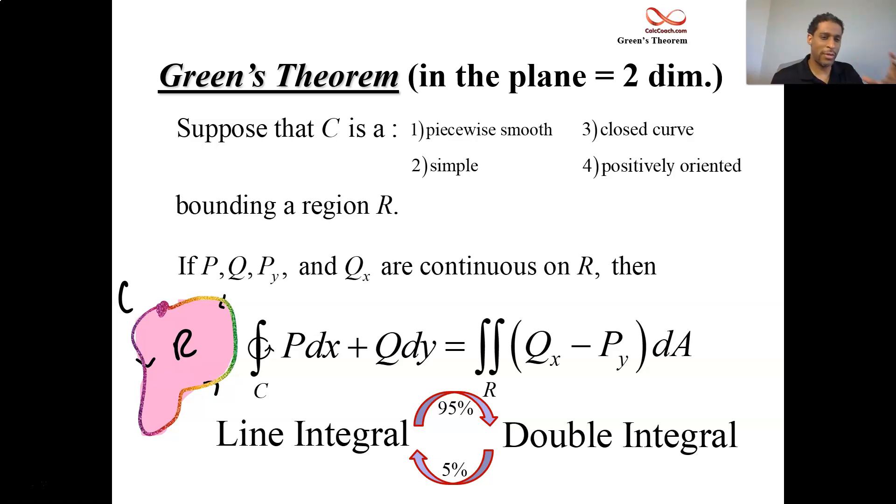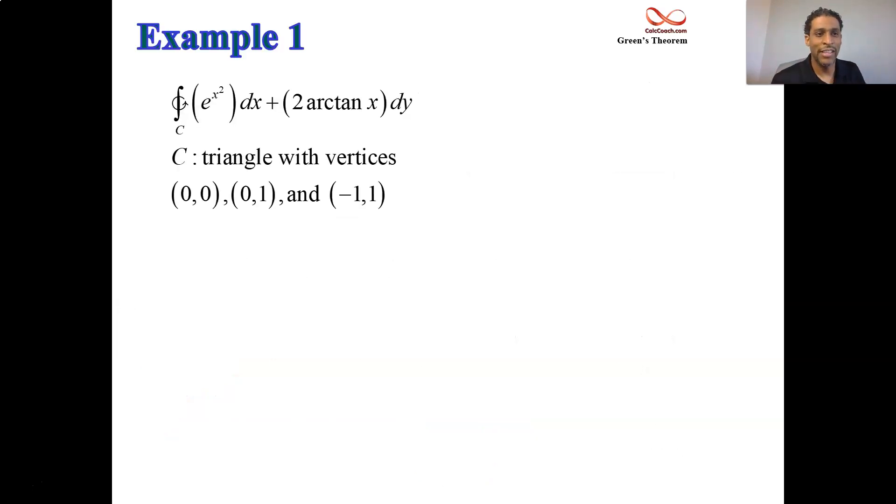So we understand about the curves being closed and the orientation. We have the statement of Green's theorem. Let's see our first example. In example one, we have e to the X squared DX and two arctan X DY. And the region that we're interested in is a triangle with these particular vertices, the origin, one on the Y axis, and the point one negative one, and we're going to traverse that in a positive manner.